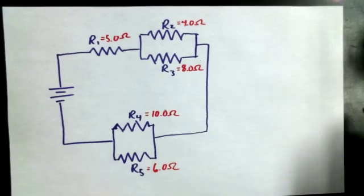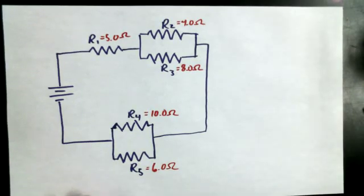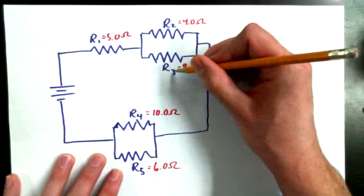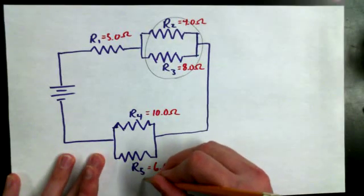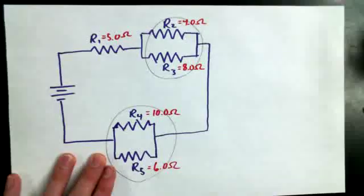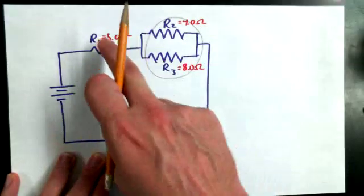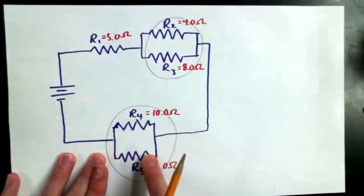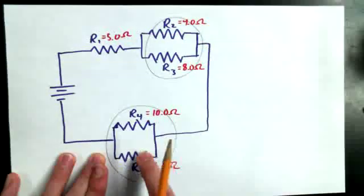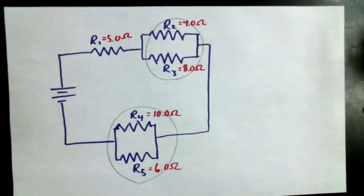The first thing that I would expect most people would do would be to find the combined resistance in parallel for resistors two and three, and find the combined resistance in parallel for resistors four and five, and then treat this resistor, this resistor junction, and this resistor junction as being effectively three resistors in series. Good so far?